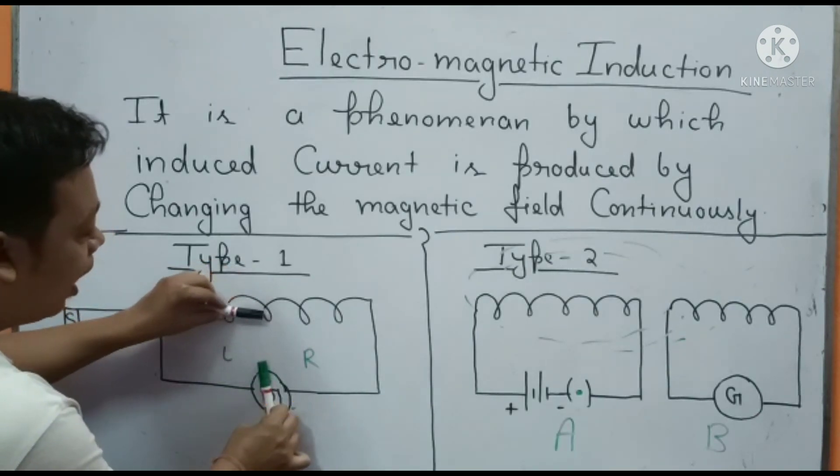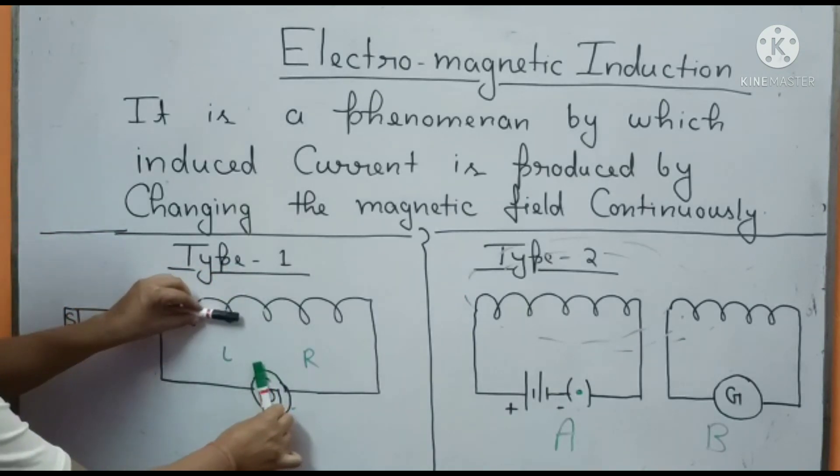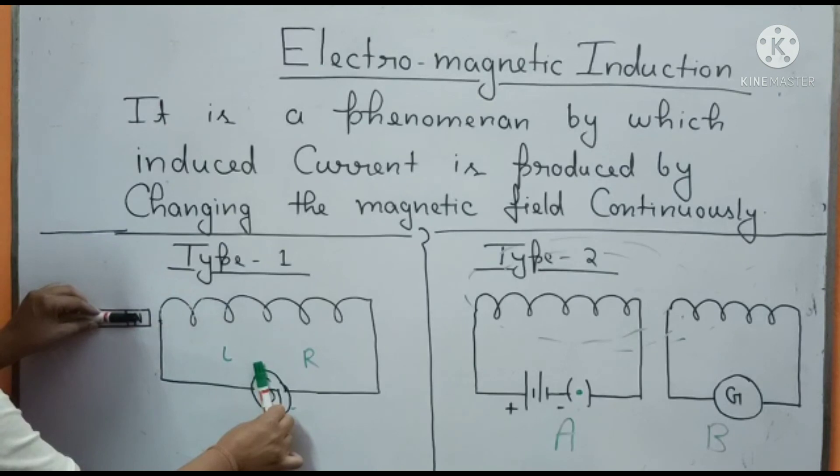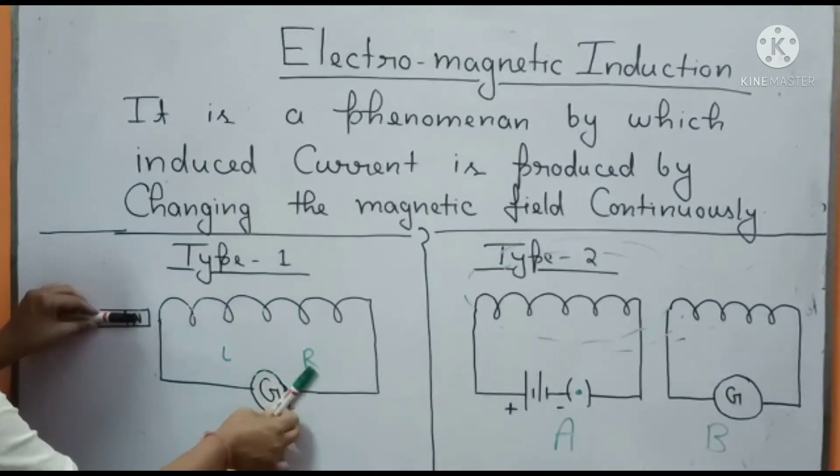Now if you are moving the magnet outside, the magnet is moving towards the left side, so the deflection of the galvanometer will be on the right side.